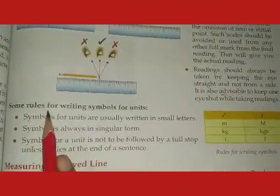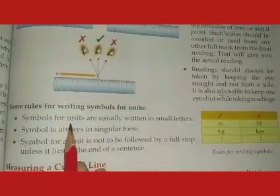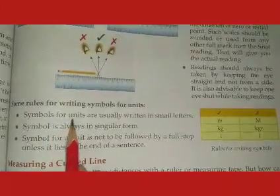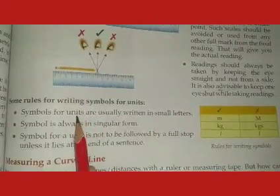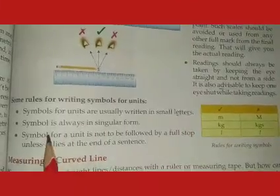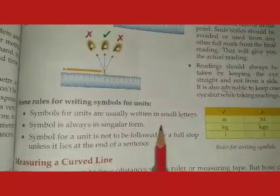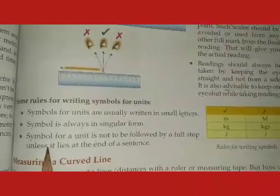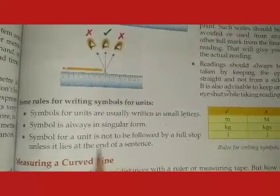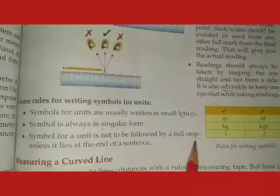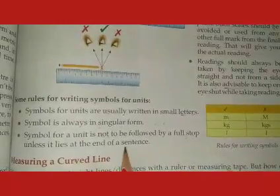Some rules for writing symbols for units: Symbols for units are usually written in smaller letters. Symbols will always be in singular form — never write KGs, MKs, or Ls. A symbol for a unit is not to be followed by a full stop unless it lies at the end of a sentence.